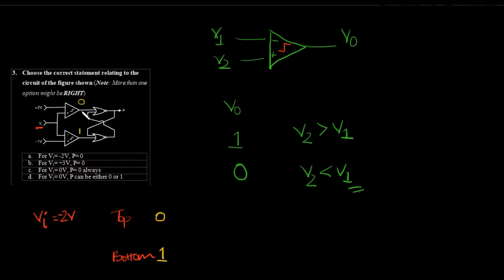If it is 0 and 1 — what kind of circuit is this? This is nothing but an SR flip-flop. When you have 0 and 1 as the input to the flip-flop, where this is R input and this is S input — when R is 0 and S equals 1, this is the set state.